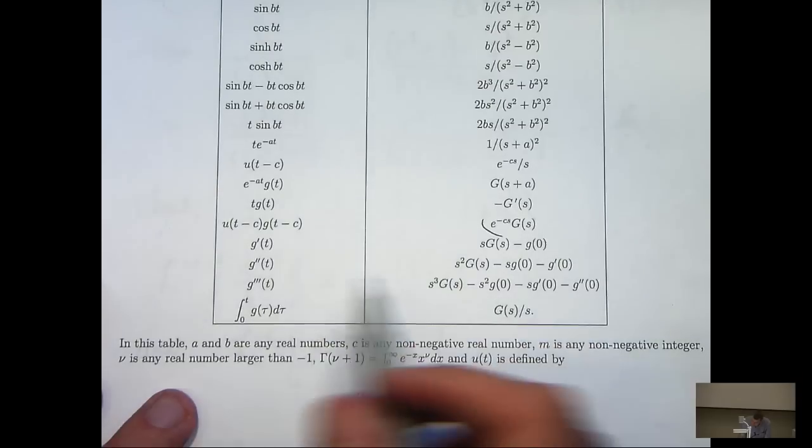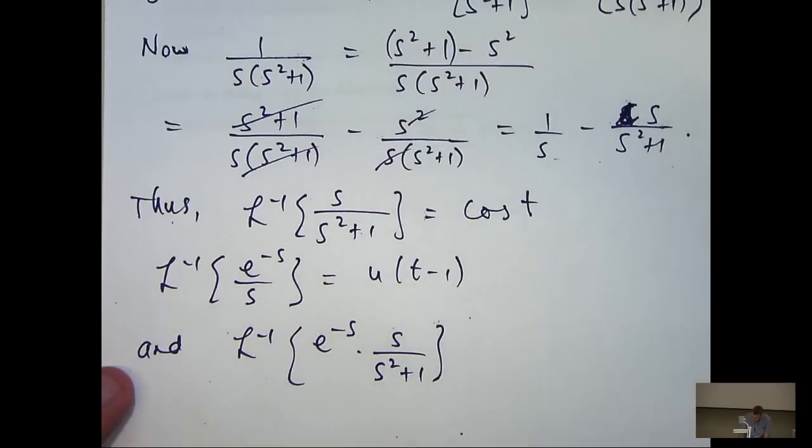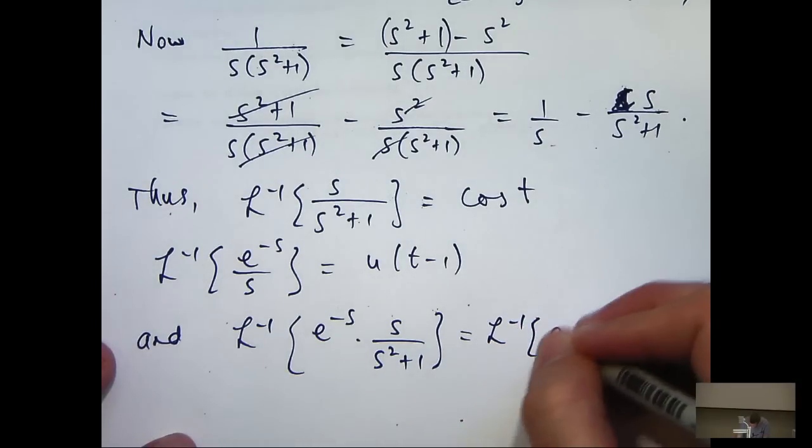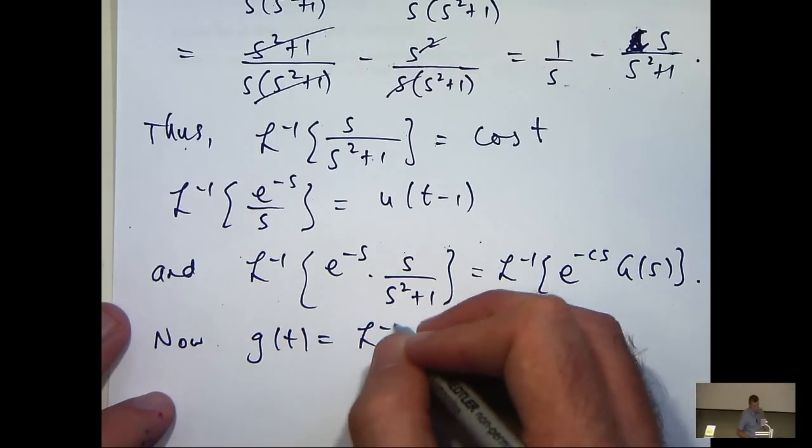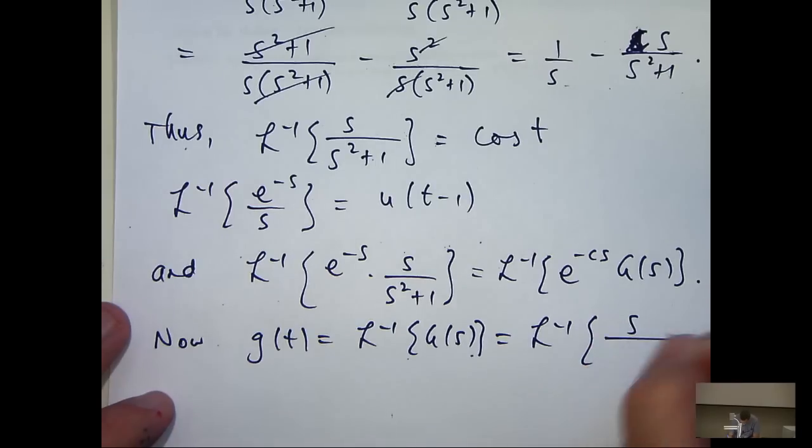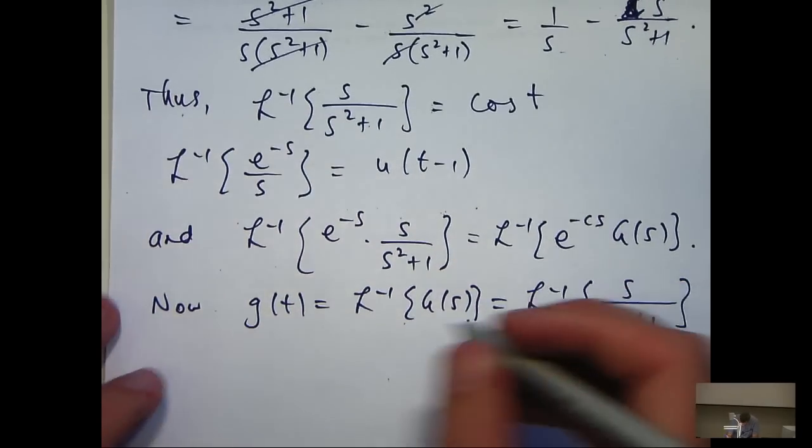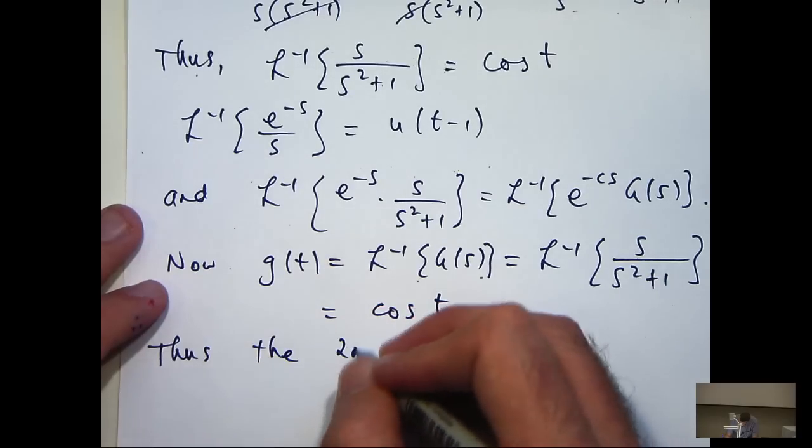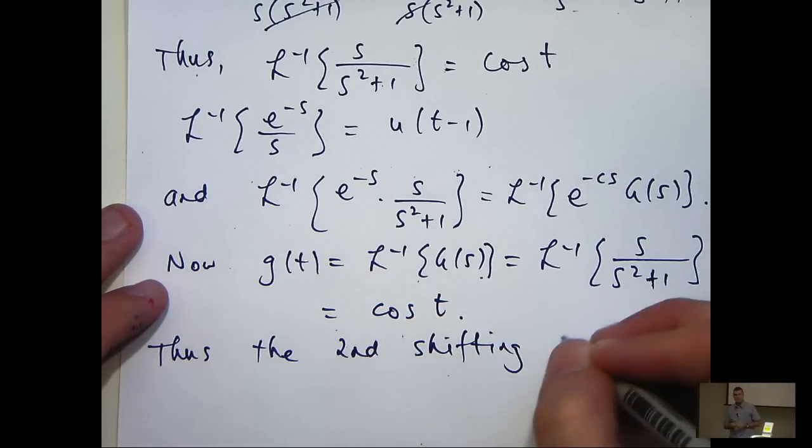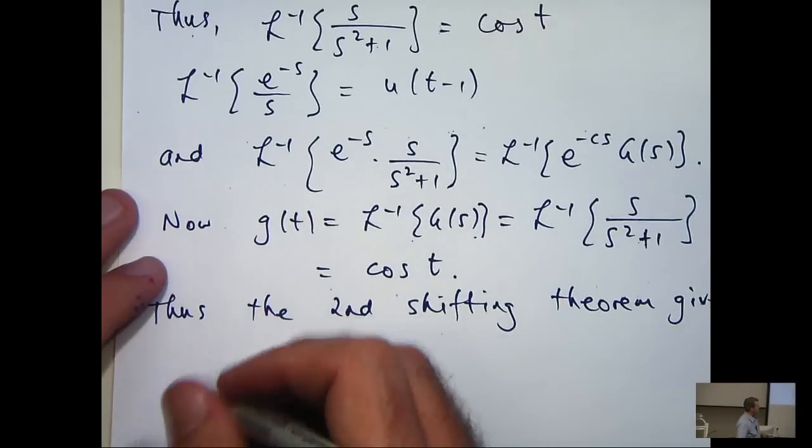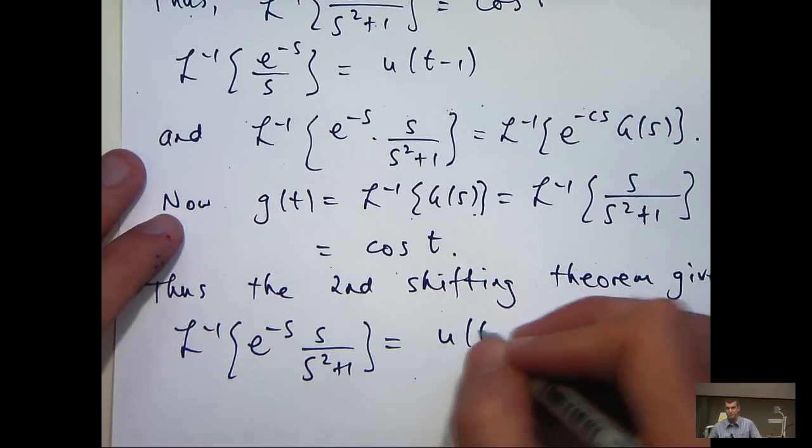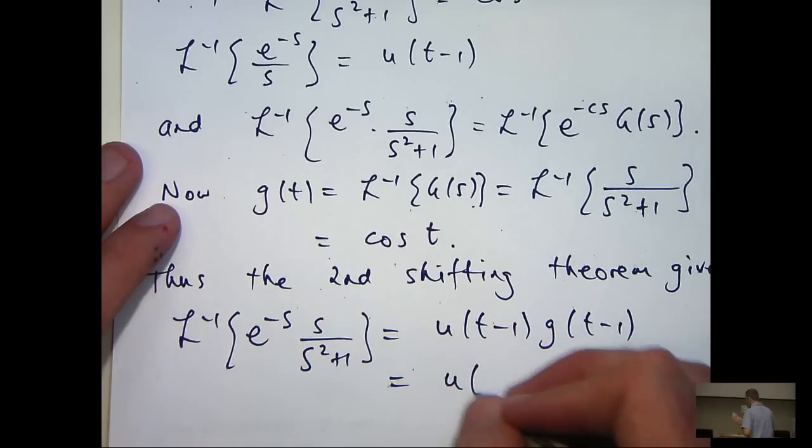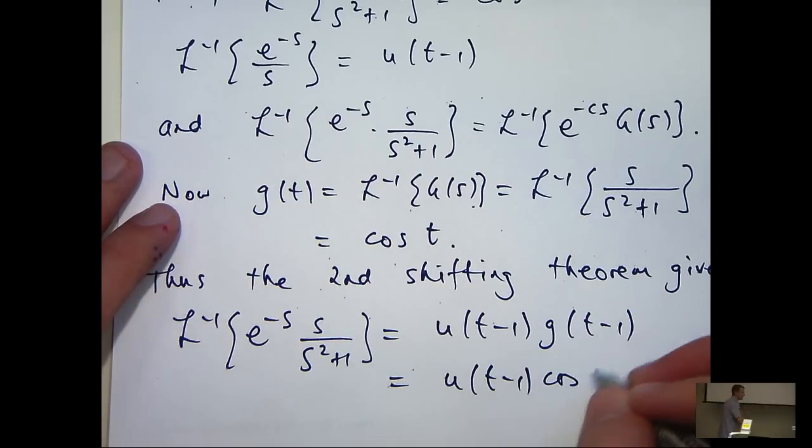So, what we want to do is calculate little g of t and then shift it and then multiply by this heaviside step function. So, now we saw before that the inverse transform of this is just cos t. The second shifting theorem gives the following form.